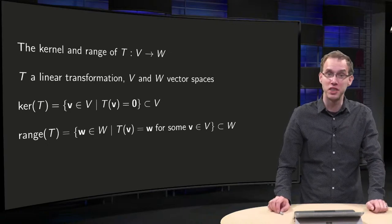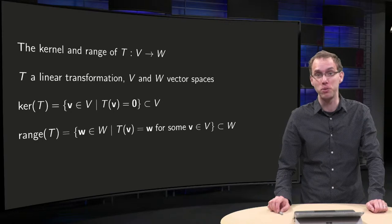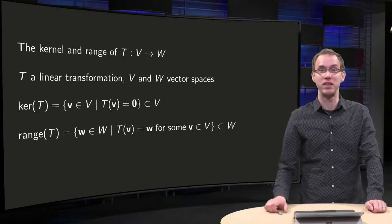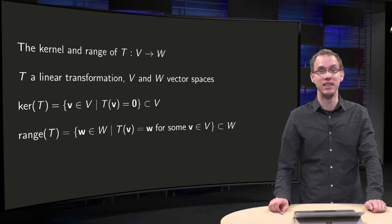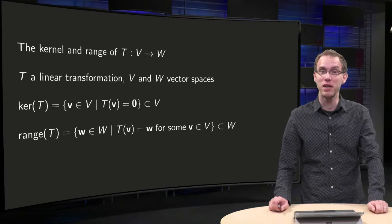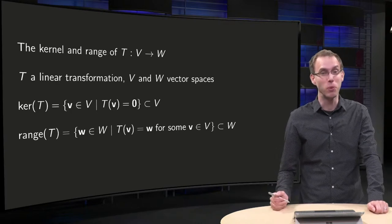Finding the kernel and the range of a transformation is often difficult, or even impossible. But if we have a matrix transformation, then we can find them explicitly and easily. In fact, they turn out to be some very well-known subspaces. Let us see in this video what they are.